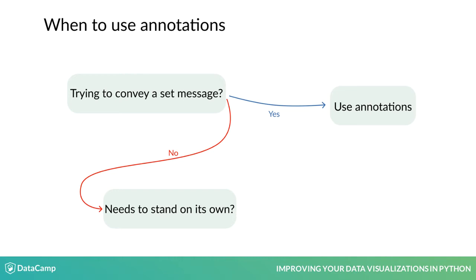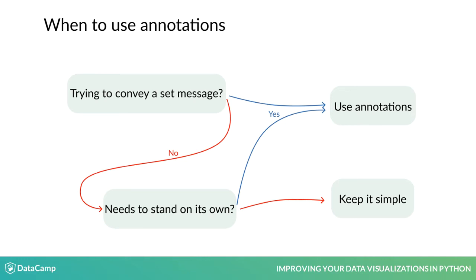You then need to ask yourself the second question: does your visualization need to stand on its own? If the visualization is going to need to work on its own, such as one-off charts like a tweeted photo, annotations can help you avoid surplus text on the margins or legends of the figure that people tend to ignore. If your plot isn't trying to convey a message and doesn't need to stand on its own, such as a chart taking place in a longer report, adding annotations can actually just serve to clutter up the plot, as the required information for deciphering colors or shapes is known from the context, and you should keep it simple.